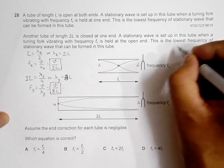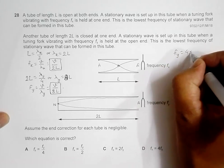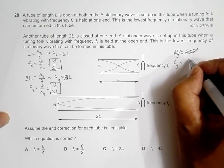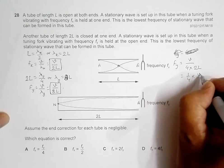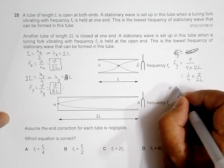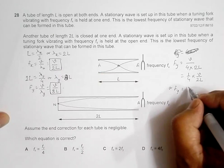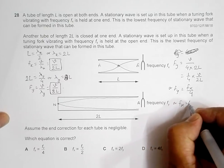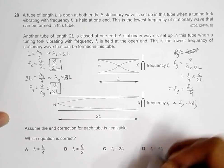Now I can rewrite this. fy is equal to V over 8L, and fx is equal to V over 2L. So fy equals fx divided by 4, or equivalently fx equals 4fy. If you look at the answer choices, choice D is the correct answer.